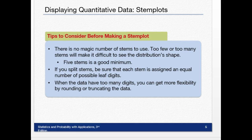The first one would go zero to four on the leaves, and the second would go five to nine. When the data have too many digits, you can get more flexibility by rounding or truncating the data, which we're not going to mess with that a whole lot.